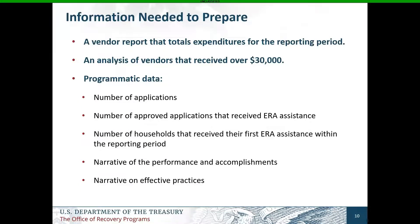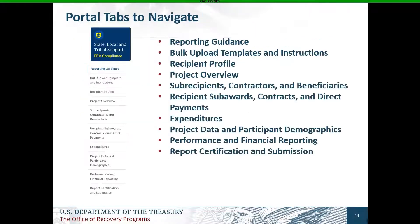In addition to financial data from your accounting software, the quarterly reports also collect programmatic data. I find it helpful to type out the narrative performance section in a Word document and then copy and paste or upload that. We will now cover an overview of the required sections in the portal. Those sections include the reporting guidance, bulk upload templates and instructions, recipient profile, project overview, sub-recipient contractors and beneficiaries, sub-awards contracts and direct payments, expenditures, project data and participant demographics, performance and financial reporting, and report certification and submission.